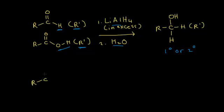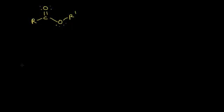Let's start with an ester. We have our carbonyl with lone pairs, and down here we have our R prime group — so there's our ester. We add lithium aluminum hydride in excess. In terms of molar equivalents, lithium aluminum hydride is Li⁺ and then Al bonded to four hydrogens, giving the aluminum a negative one formal charge.